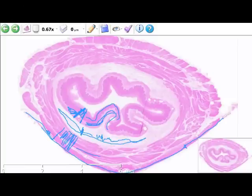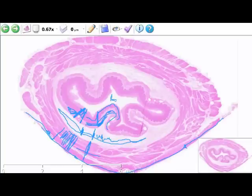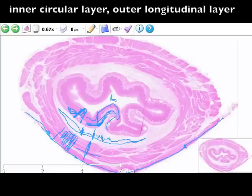So from inside to outside: lumen, epithelium, lamina propria, muscularis mucosae. Those three layers form together the mucosa of the organ. Then we have the submucosa. We have the muscularis externa. And then we have the mesothelium of the serosa. Now that's almost all the layers.